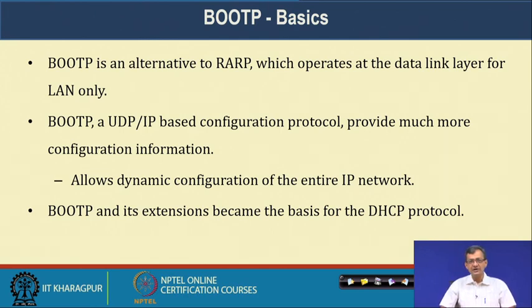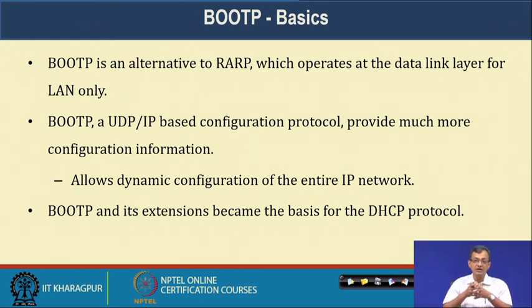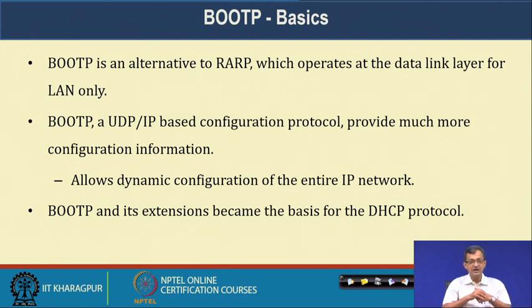BOOTP is an alternative to RARP, which operates at the data link layer for LAN only. BOOTP is a UDP-based configuration protocol that provides much more configuration information and allows dynamic configuration of the network IP configuration. These companion protocols have upper layer linkages but also need to deal with the Layer 2 MAC address - that is why we are discussing them in the context of the data link layer. BOOTP and its extensions became the basis for the DHCP protocol.